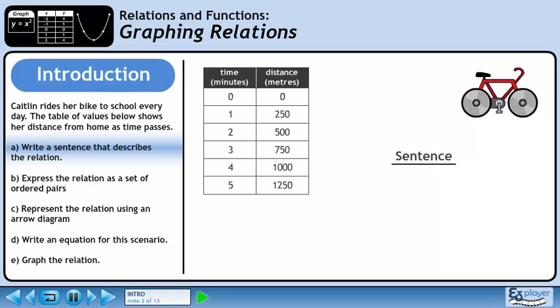In Part A, we will write a sentence that describes the relation. Caitlin bikes 250 meters for every minute she travels.